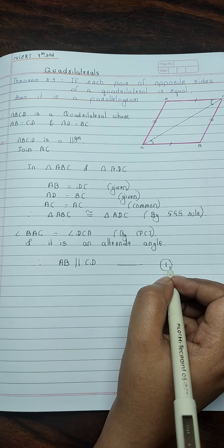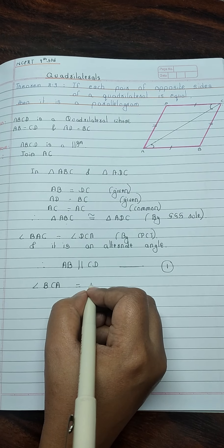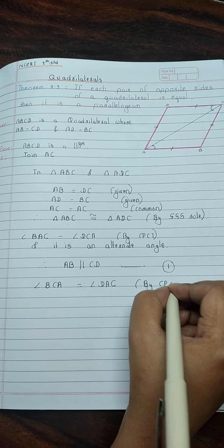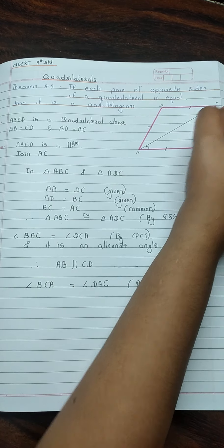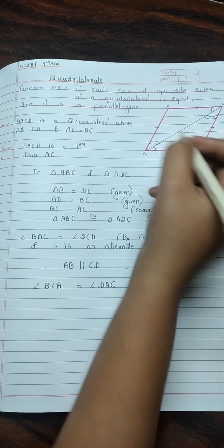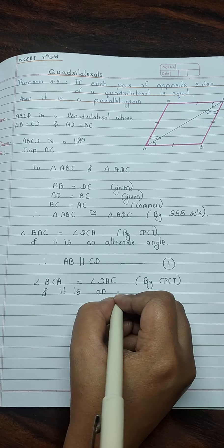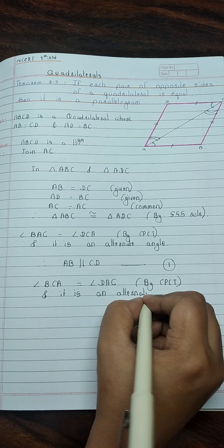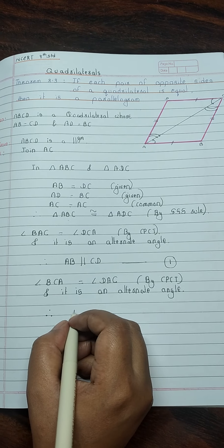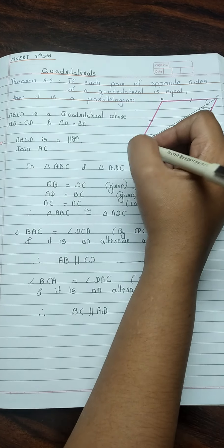Angle BCA equal to angle DAC. And it is an alternate angle. Therefore, BC parallel to AD. You can write it as 2nd.